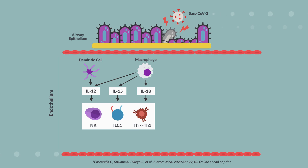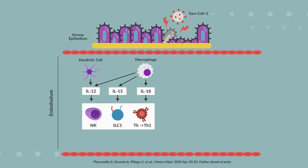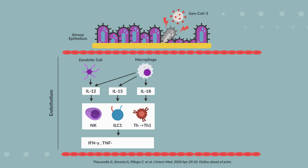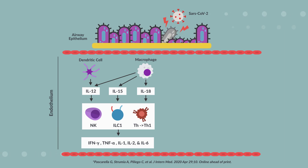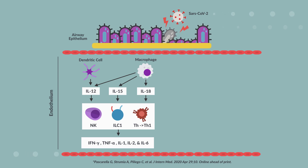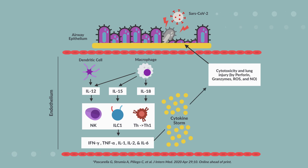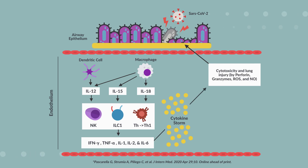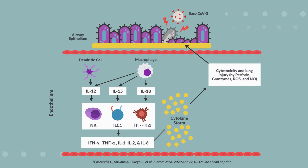These interleukins in turn activate natural killer cells and innate lymphoid cells, and promote differentiation of T helper lymphocytes into type 1 helper, or Th1, cells. Th1 cells release a number of cytokines including interferon gamma, tumor necrosis factor alpha, IL-1, IL-2, and IL-6, which further activate natural killer cells to secrete perforin, granzymes, reactive oxygen species, nitric oxide, and cytotoxic T lymphocytes in an attempt to kill the virus.